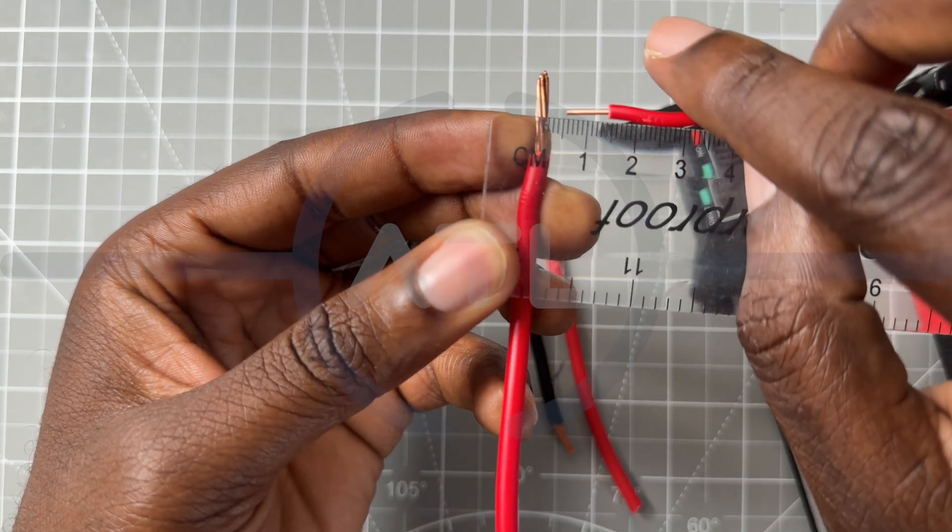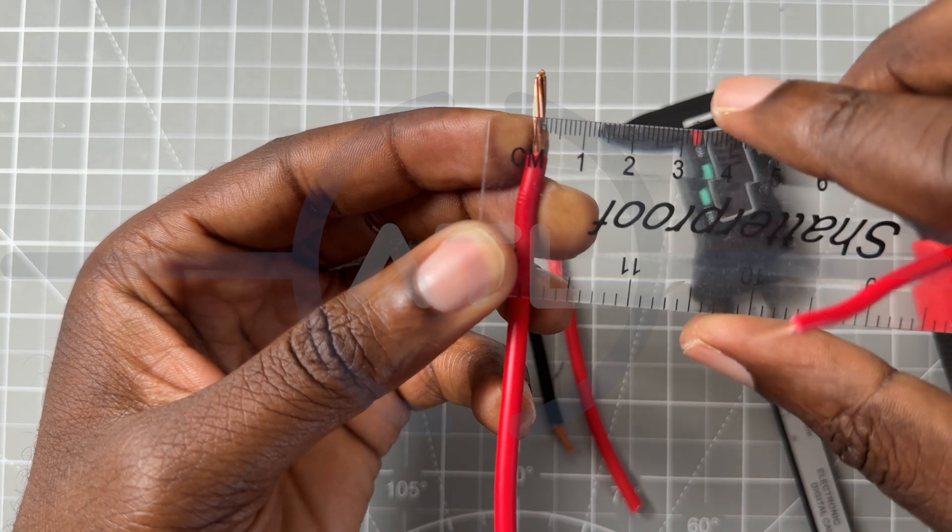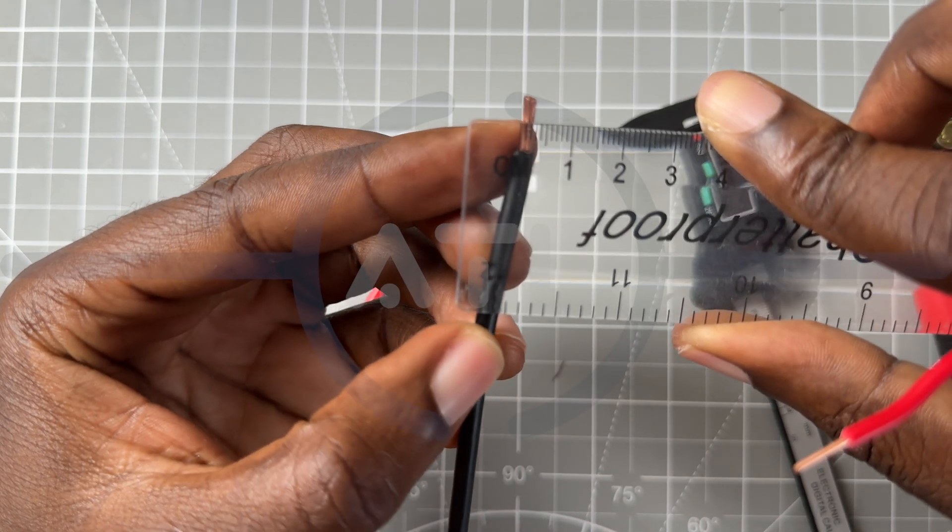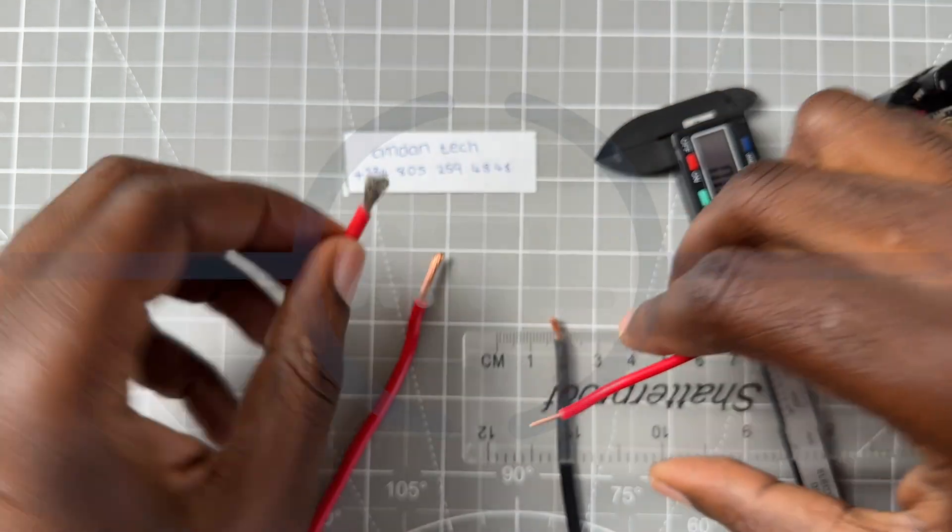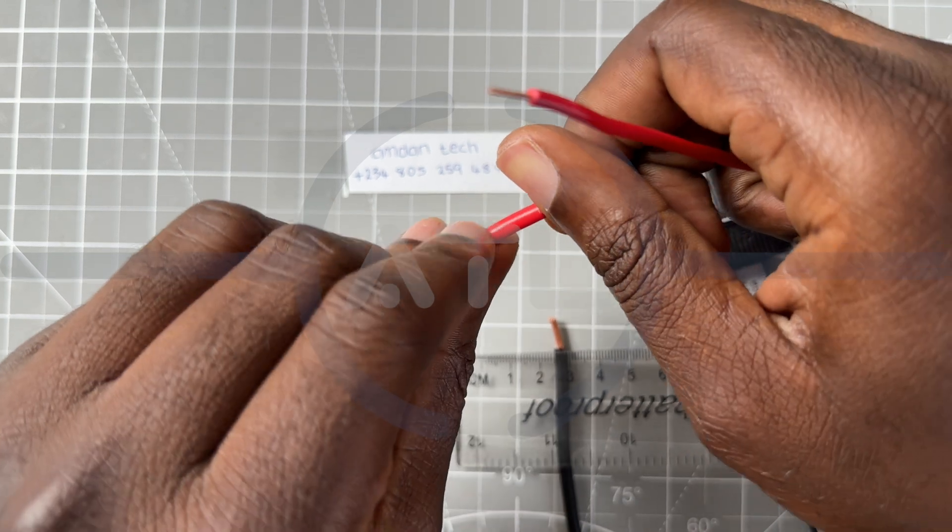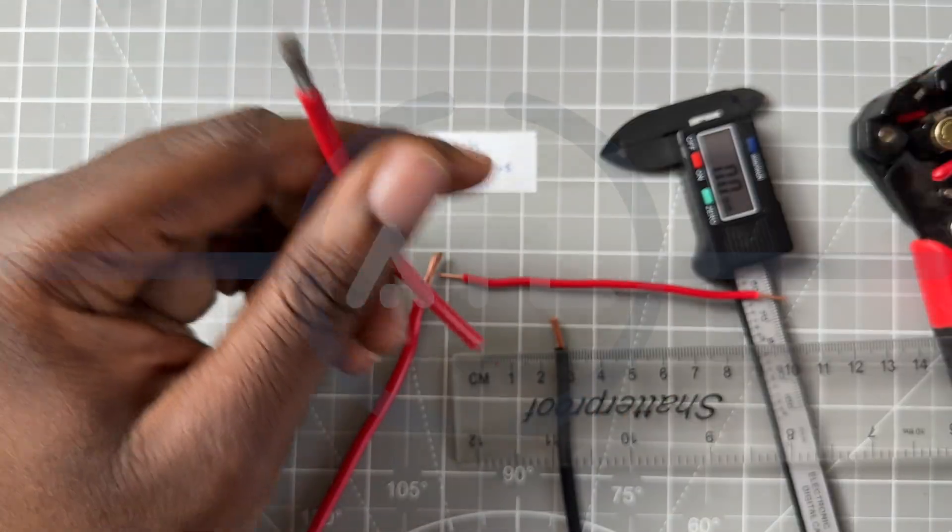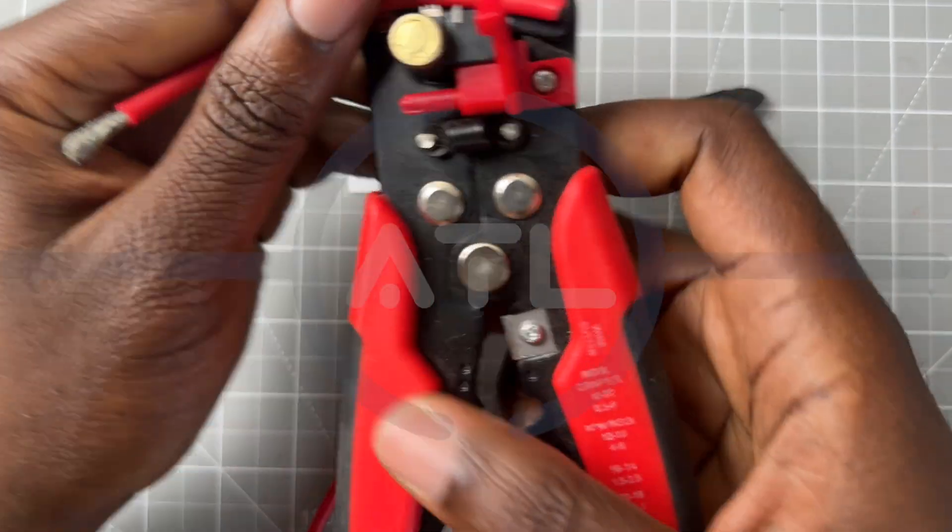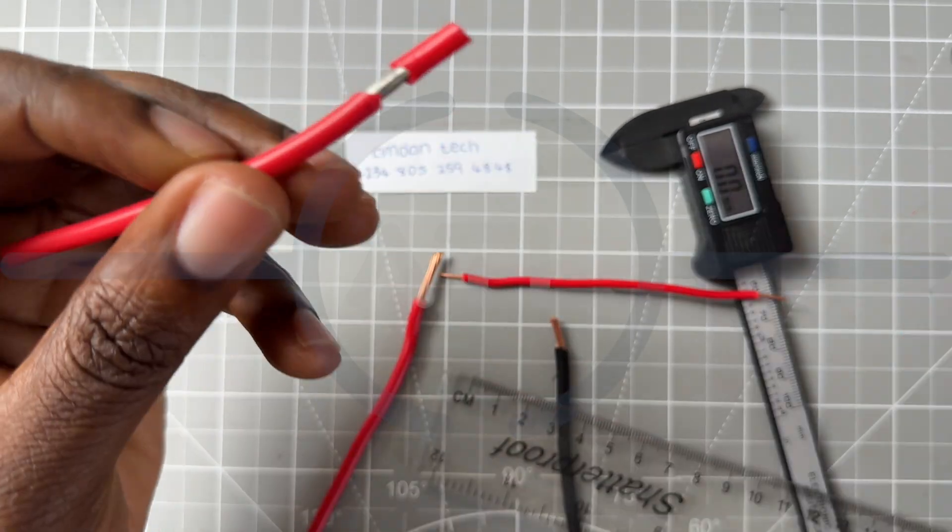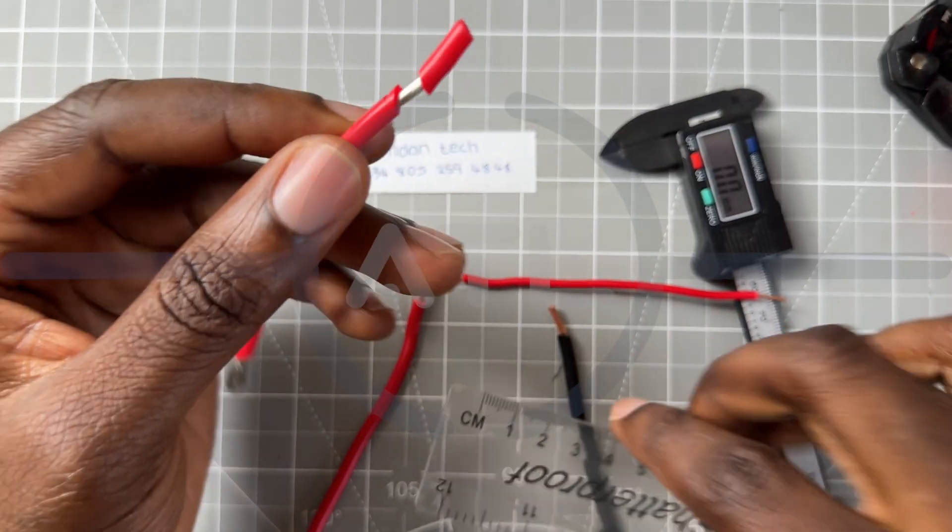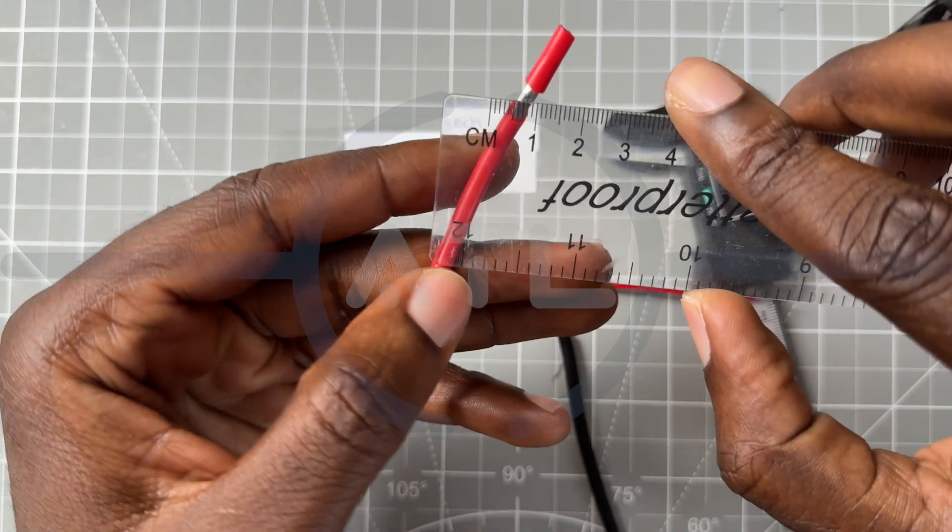This also gives us around the same measurement with the second one, so this is also around 2.5 mm. Next we have this one here, this is a bit thick, so what we'll do I will use my stripper to strip just a bit of the wire, so that this part will pack the wire in place, and then we'll go ahead and measure with our ruler. This is also around 2, 2.5 thereabout.